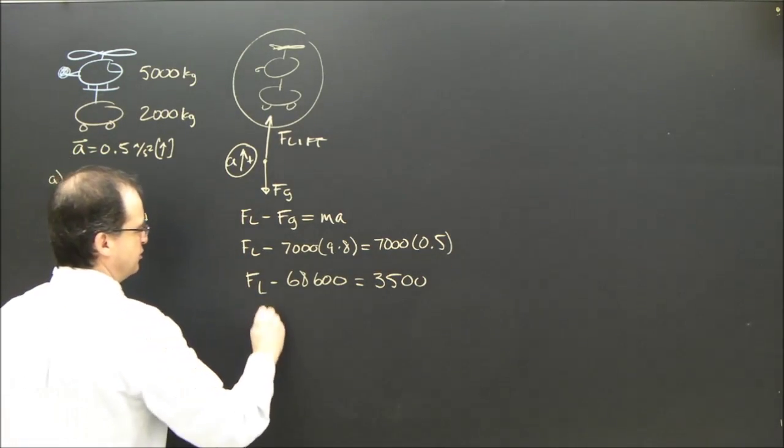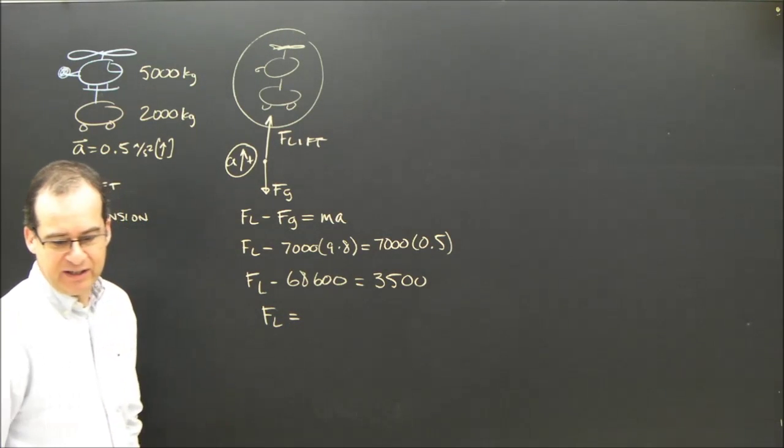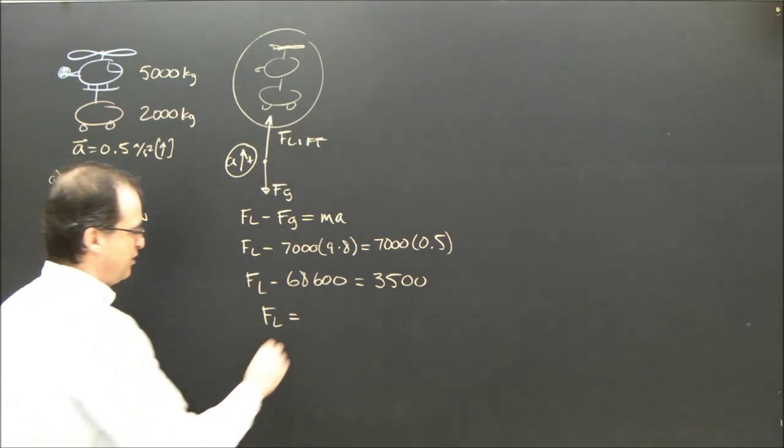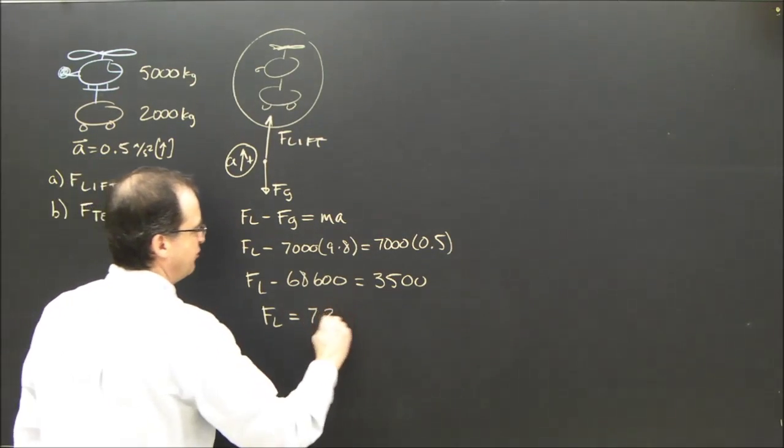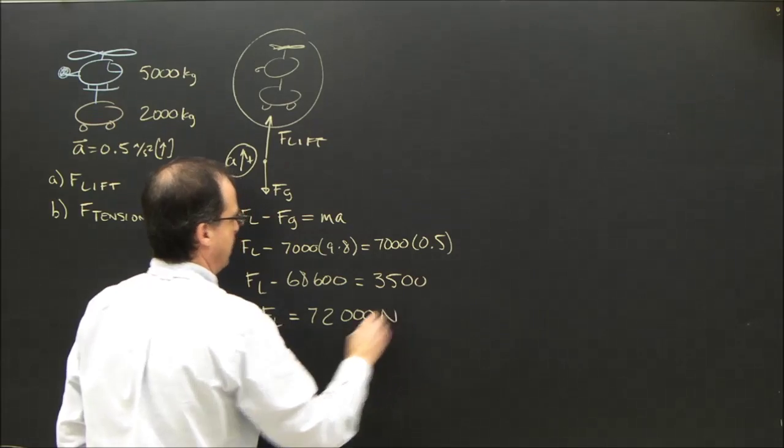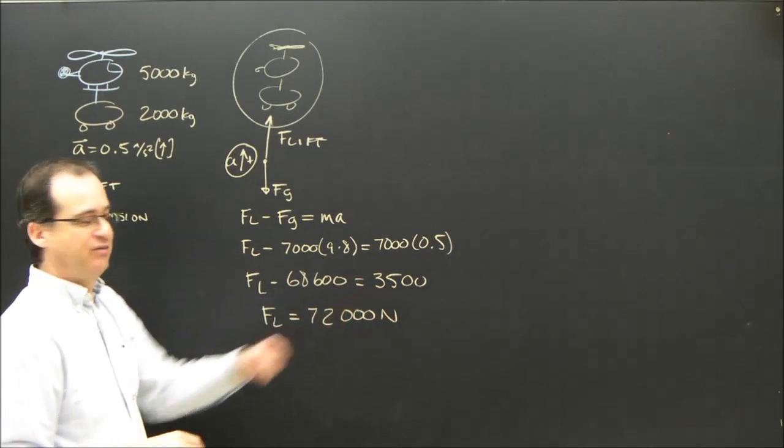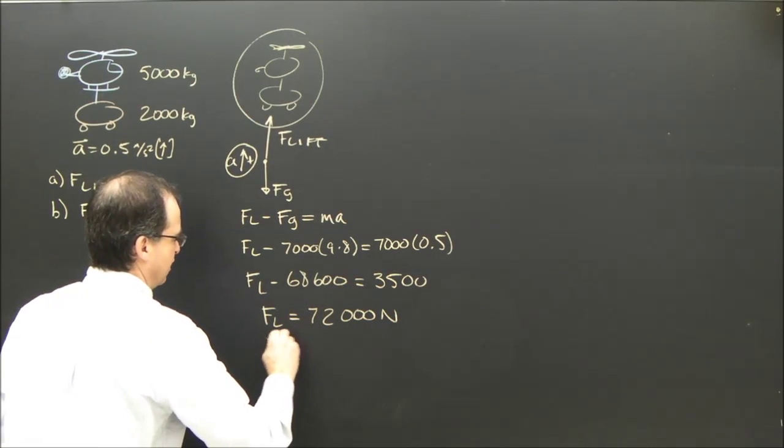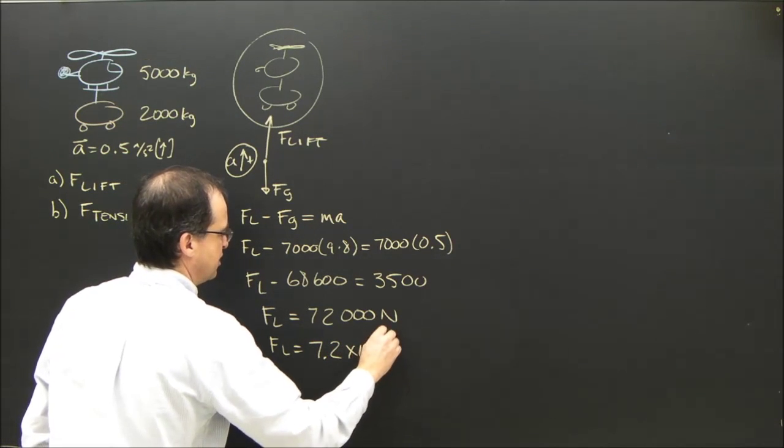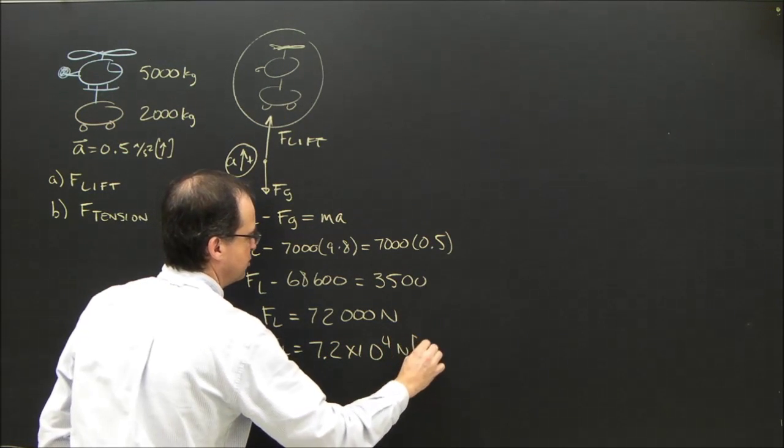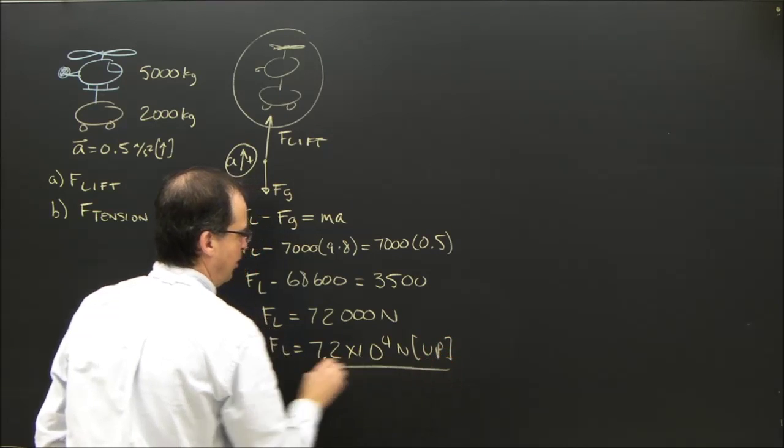I rearrange the lift on the helicopter is 72,000 newtons. Because this becomes positive as the 3,500. So the lift is 7.2 times 10 to the 4 newtons, and we should say up.